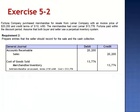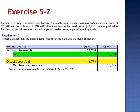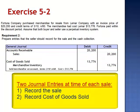This journal entry is a clear example of the matching principle. In this case, the expense — cost of goods sold — is recognized simultaneously with the revenue it helps generate: sales of $20,200. It's important to remember that anytime there's a sale in the perpetual inventory system, two journal entries are recorded: the sale, and its related cost.